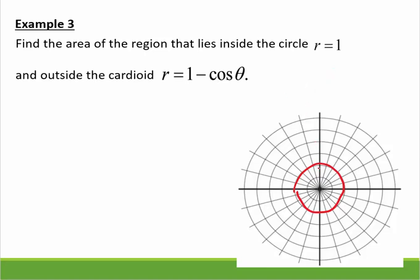Now my cardioid, when I plug in 0, I get 0. When I plug in π/2, I get 1. When I plug in π, I get 2. Remember, I'm going by halves. And then at π, 3π/2, I get 1 again. So our graph looks something like this.